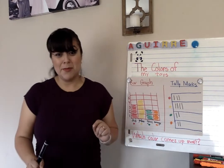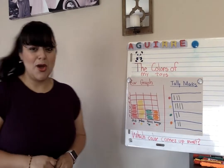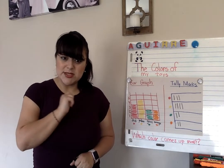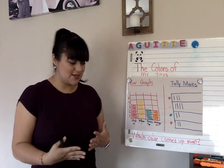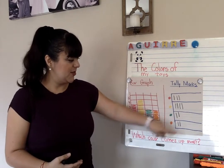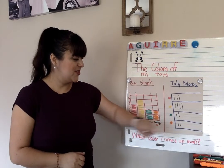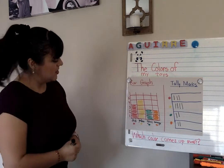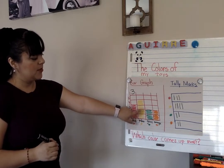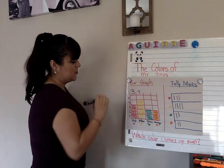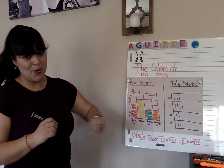Which color of toy came up the least amount of times? There are two colors that came up the least: green and orange. How many green toys were in the box? Two. How many orange toys were in the box? Two. So now we can write down that information: there were three red toys, four yellow toys, two green toys, and two orange toys.